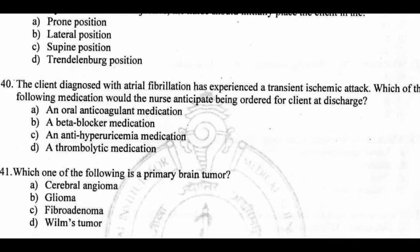Question 40: The client diagnosed with atrial fibrillation (AF) has experienced a TIA — transient ischemic attack. Which medication would the nurse anticipate being ordered at discharge? Options: anticoagulant, beta blocker, anti-hypertensive medication, thrombolytic agent. Right answer: anticoagulant medication, as oral anticoagulation is advised for ischemic attack prevention.